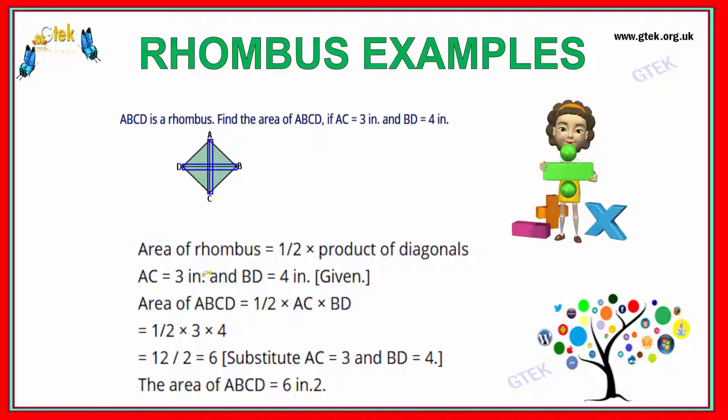So area of the rhombus equals half times AC times BD. That's half times 3 times 4. The value of area of ABCD is 6 square inches.